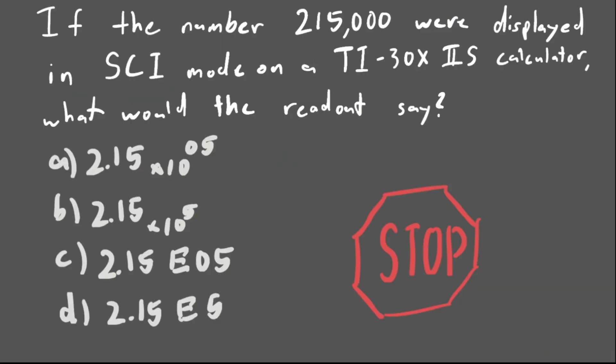Here, you give it a try! If the number 215,000 were displayed in SCI mode on a TI-30 XIIS calculator, your calculator, what would the readout say? Hopefully, you checked this out for yourself and you see that 215,000 would be written as 2.15 times 10 to the 5 on the readout. Pretty cool, eh?